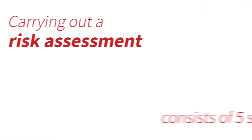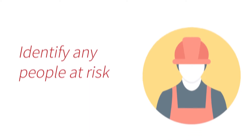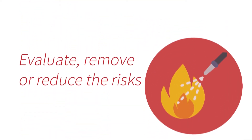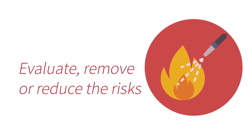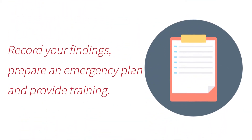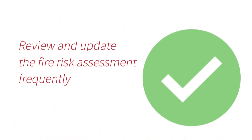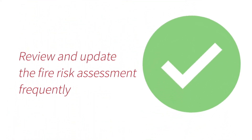Carrying out a fire risk assessment consists of five steps: identify any hazards; identify any people at risk; evaluate, remove or reduce the risks; record your findings, prepare an emergency plan and provide training; and review and update the fire risk assessment frequently.